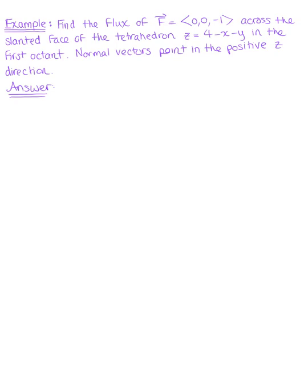Find the flux of the vector field across the slanted face of the tetrahedron, z = 4 - x - y, in the first octant, where normal vectors point in the positive z direction. We are integrating across the slanted face of our tetrahedron, which is defined explicitly.